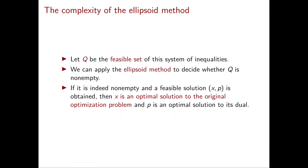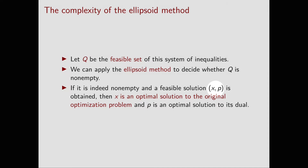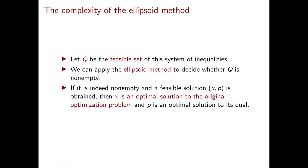We then apply the ellipsoid method to decide whether Q is non-empty. If the ellipsoid method tells us that Q is non-empty and returns a point (X, P) in Q, then by strong duality, X is an optimal solution to our original linear programming problem and P is an optimal solution to its dual. On the other hand, if the ellipsoid method tells us that Q is empty, then again from strong duality, our original linear programming problem doesn't have an optimal solution.